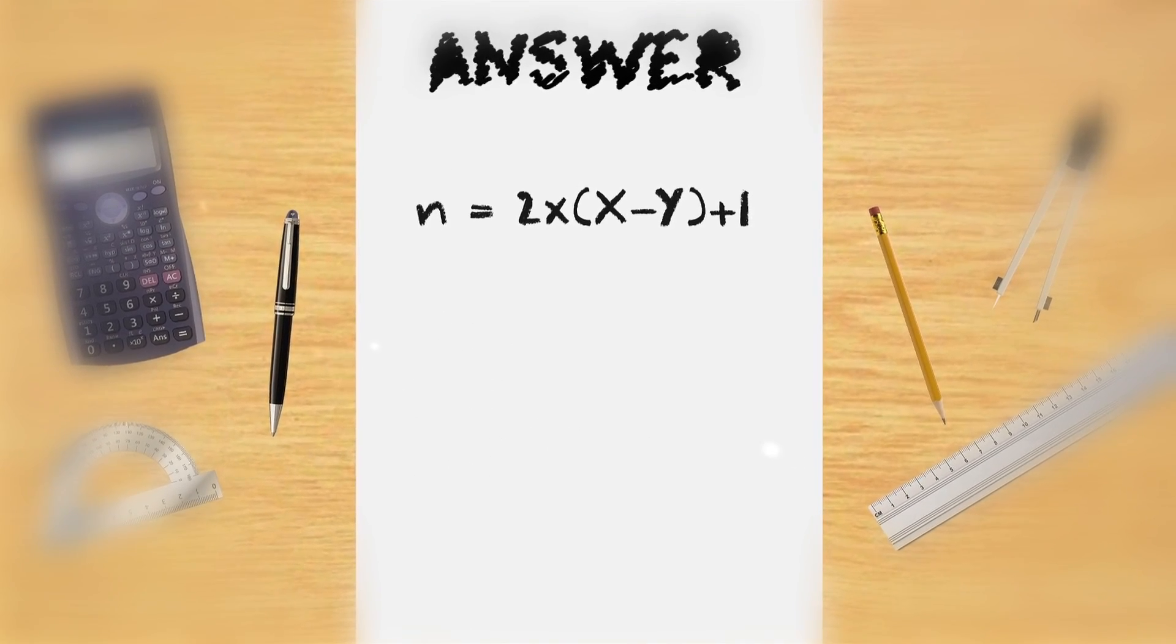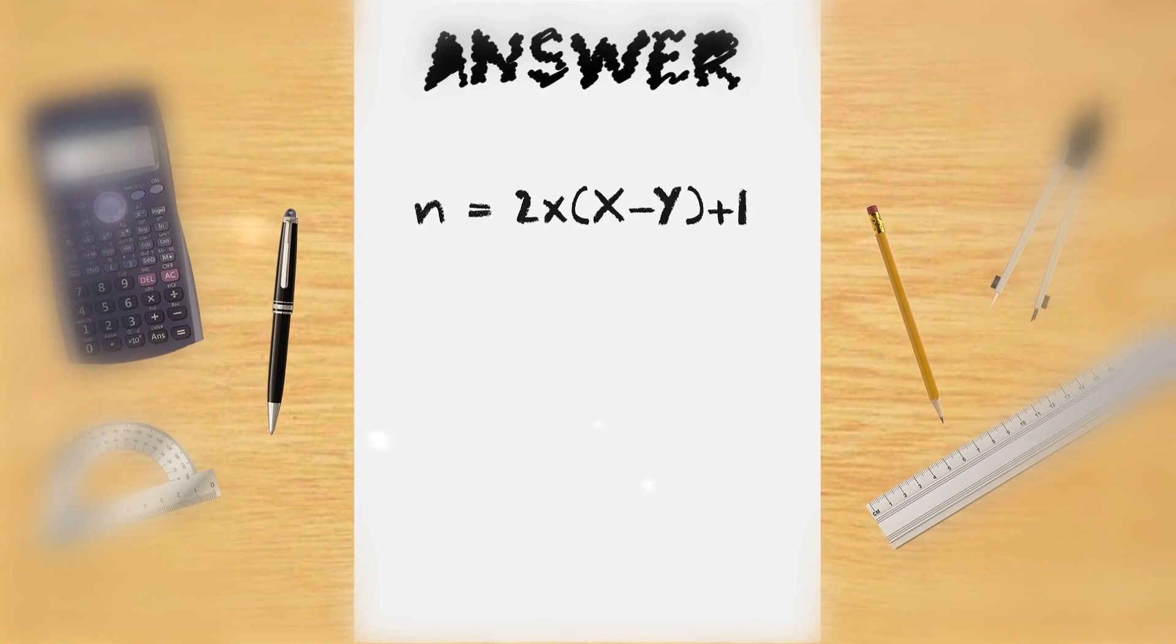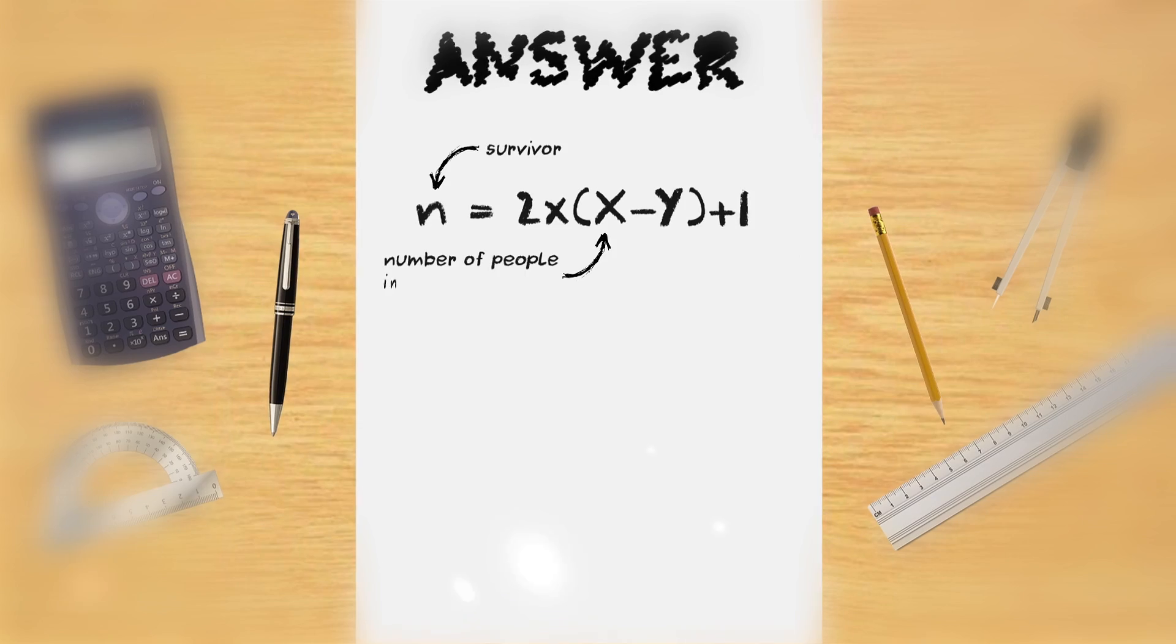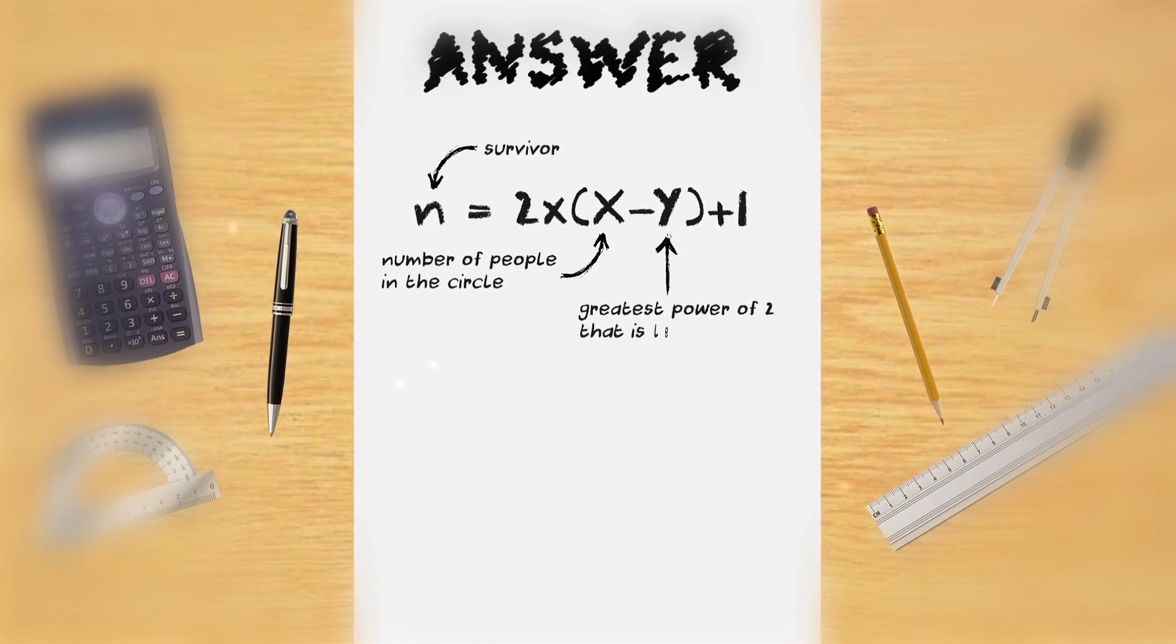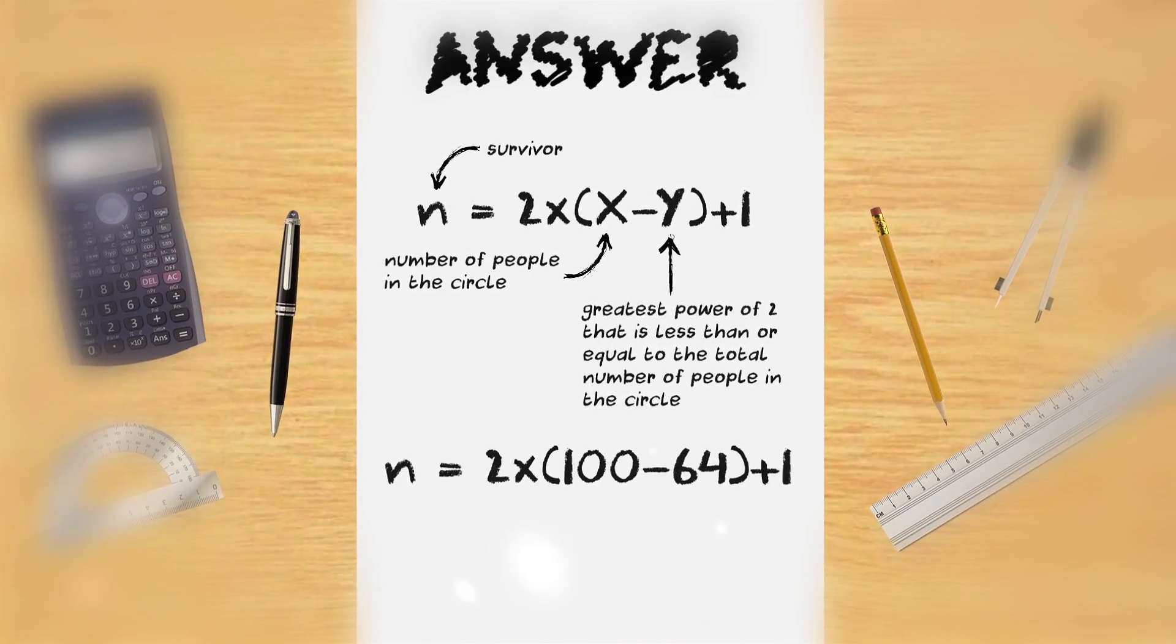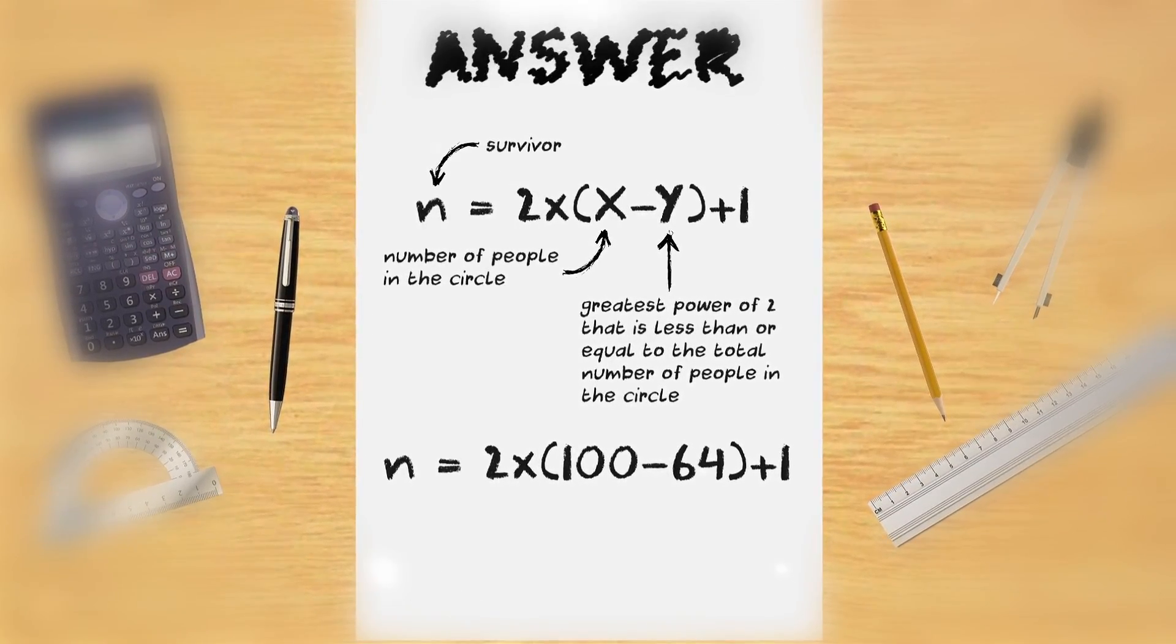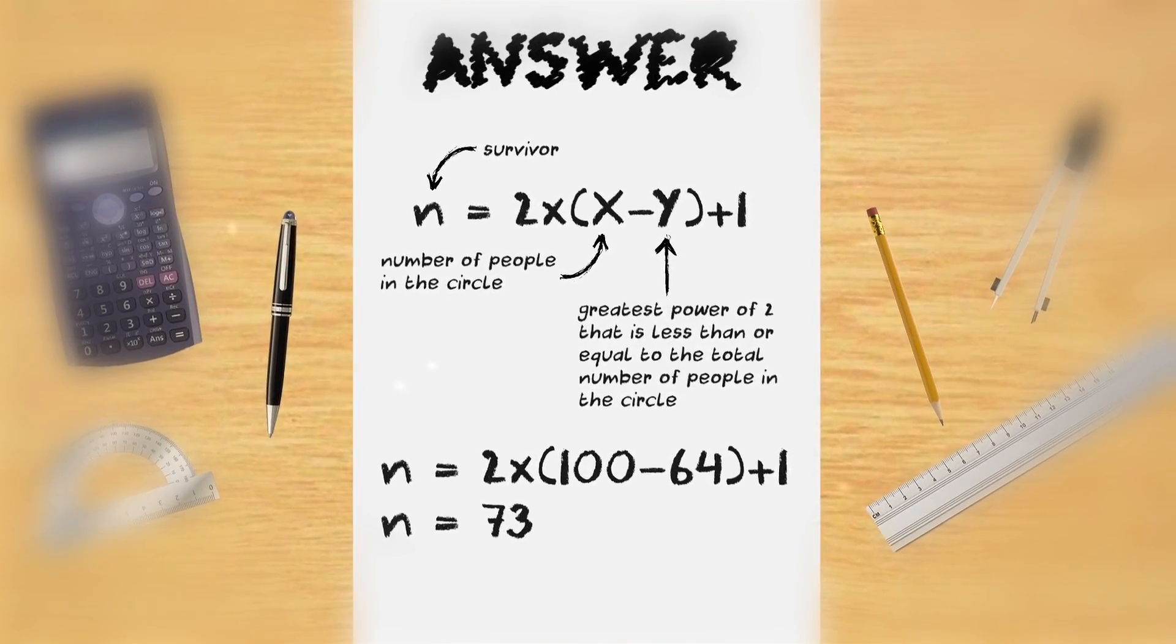if you construct the following equation, n equals 2 times open bracket x minus y close bracket plus 1 where n equals survivor and x equals number of people in the circle and y equals greatest power of 2 that is less than or equal to the total number of people in the circle, you can input the necessary values to work out the survivor. So, in this case, n equals 2 times open brackets 100 minus 64 close brackets plus 1 and therefore n equals 73.